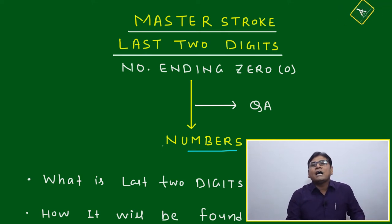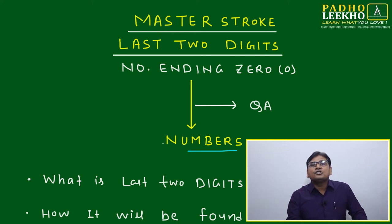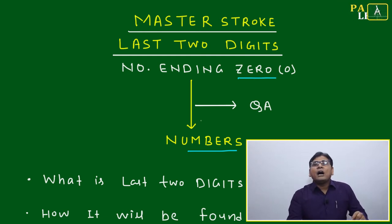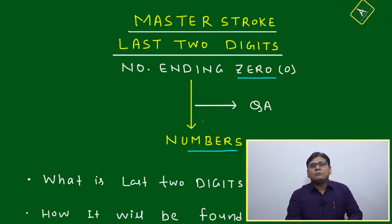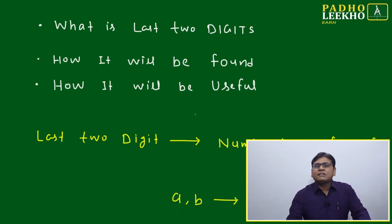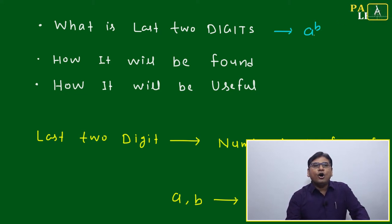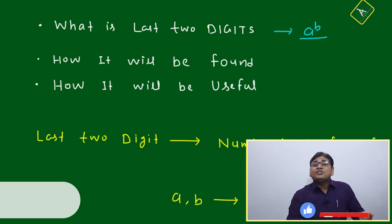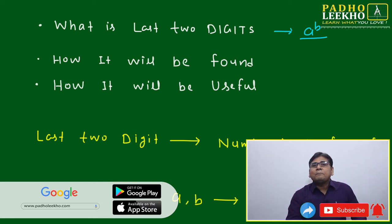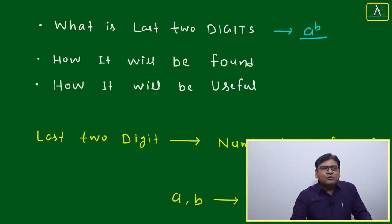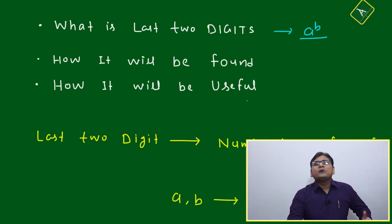In this Master Stroke, I am going to discuss the concept of last two digits. This particular session covers how to find the last two digits if a number ends with zero. Finding last two digits is one of the important remainder theorems — without it, many remainder-based questions cannot be solved. The application also helps in getting the pattern of last two digits.